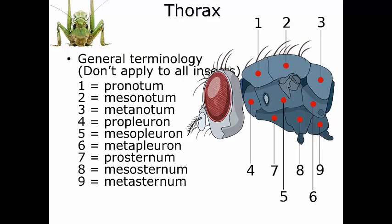These different names are really useful — they help us pinpoint exactly where we're talking about on the thorax. You're going to see this a lot when looking at keys in lab. This is the general terminology we use, though it doesn't apply to all insects. In most insects we use these terms, but there are some specialized terms for specialized insects that you'll get to know when you encounter them. In general, we can pinpoint these areas using the mix of pro-, meso-, and metathoracic segments combined with the notum, sternum, and pleuron surfaces.